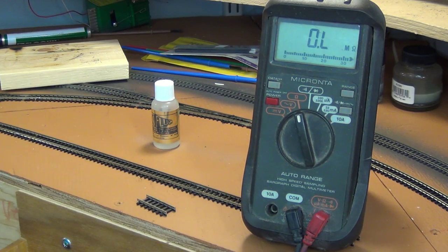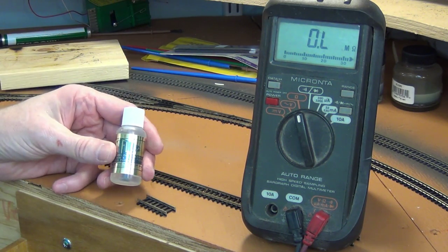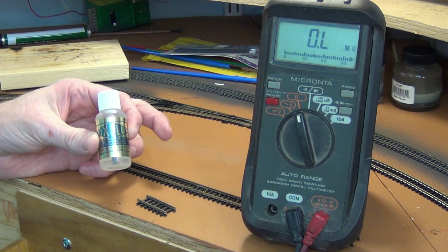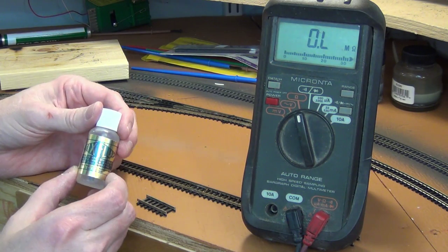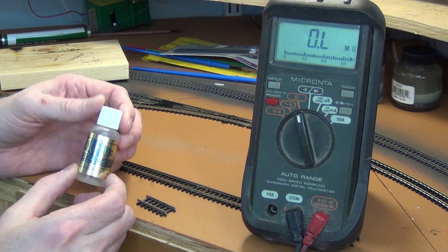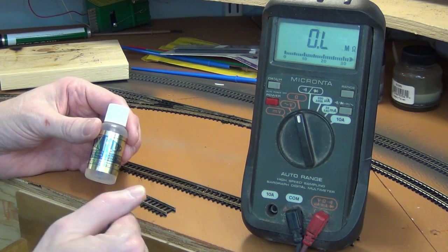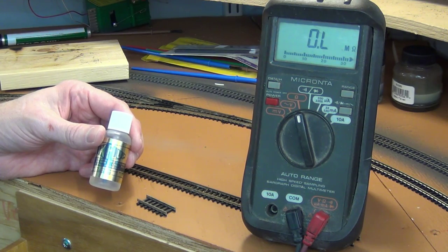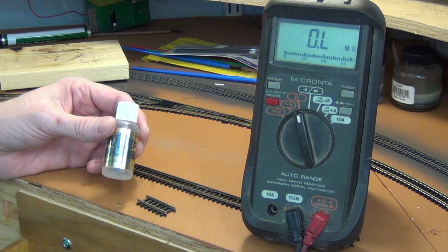So. If you have odd things happening. With your signal system. Stuff's not behaving right. It could be as simple. As. Flux. In my case. I don't know if all flux do this. But. It's shorting. Creating a path. For a current. Something across your rails.